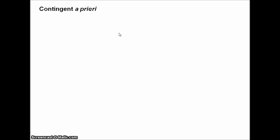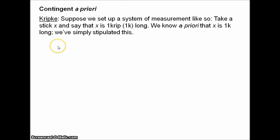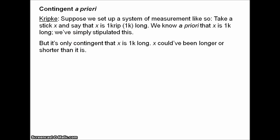Next, the contingent a priori — truths which are false in some possible worlds, but which we can nevertheless work out in our heads. These are things that could have been false, but that we don't need to consult experience to check are true. Here's Kripke again. Suppose we set up a system of measurement: we take a stick, call it X, and say that X is one Krip — abbreviated one K — an imaginary unit. We know a priori that X is one K long; we didn't have to investigate the world and take measurements. We've simply stipulated by definition that it's one K long.